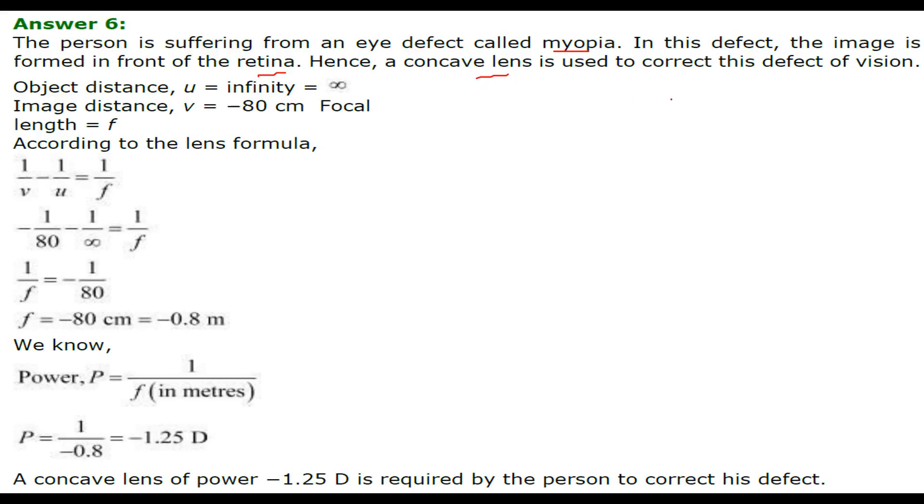In this case the light is coming - if this is the eye, light is coming from infinity. So we will take u as infinity. v is given as minus 80 centimeter. We have to find out the focal length. We have taken minus with the convention. We will put this in the lens formula. 1 by infinity is 0. So f will be minus 80 centimeter.